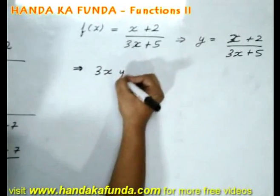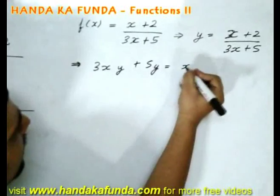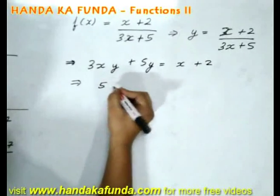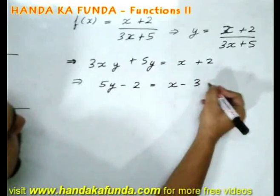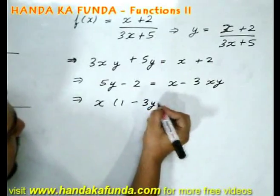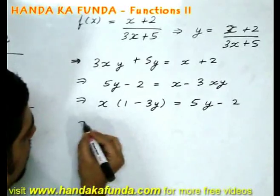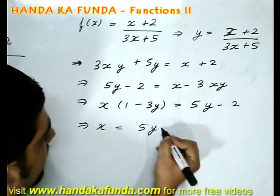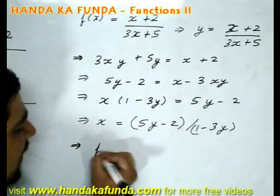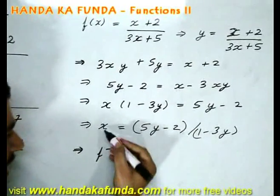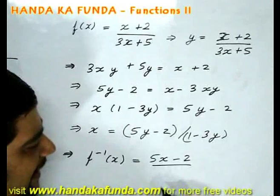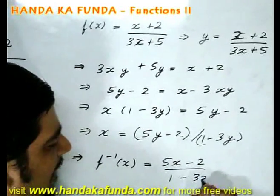Let's try and find that out. The equation would become 3xy plus 5y is x plus 2, which will translate to, if I take it to the other side, 5y minus 2 is x minus 3xy, or x can be taken common. I will be left with 1 minus 3y is equal to 5y minus 2. So the value of x is 5y minus 2 divided by 1 minus 3y, which tells me that my inverse function is effectively wherever I have x I will replace it with f inverse of x, and wherever I have y I will replace it with x. So I will get 5x minus 2 by 1 minus 3x. This is my inverse function.